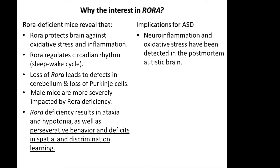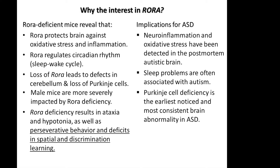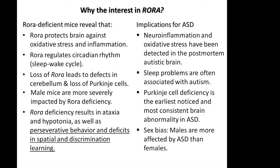So how does it relate to ASD? It's known that neuroinflammation and oxidative stress are hallmarks of the autistic brain from post-mortem studies. It's also been widely reported that sleep problems are often associated with autism, and that Purkinje cell deficiency is one of the earliest noticed and most consistent brain abnormalities reported in autism. And as is generally known, males are much more affected by autism than females. For all of these reasons, we were particularly interested in learning more about the role of RORA in connection with ASD.